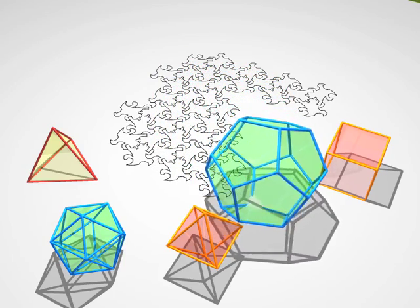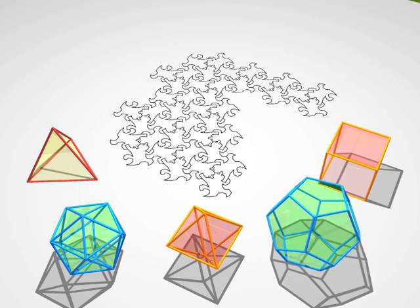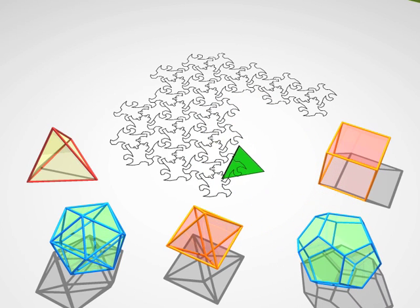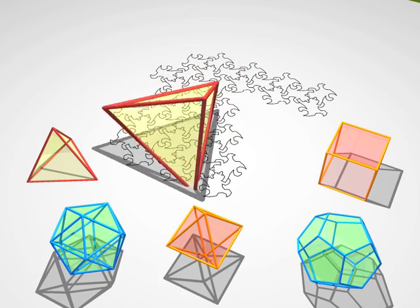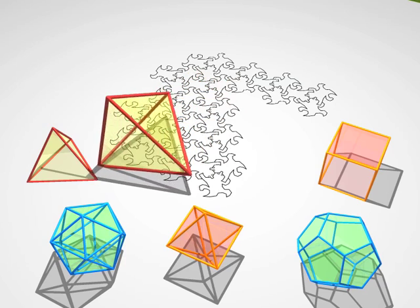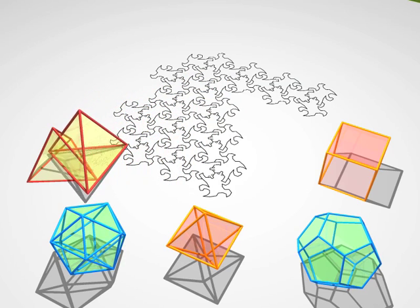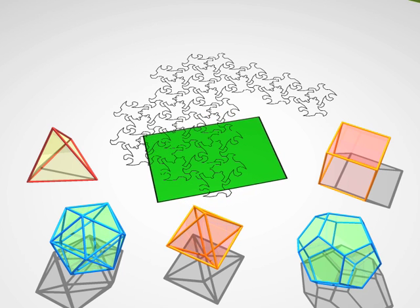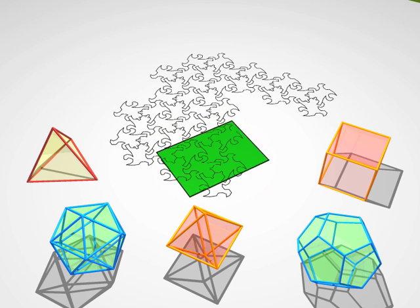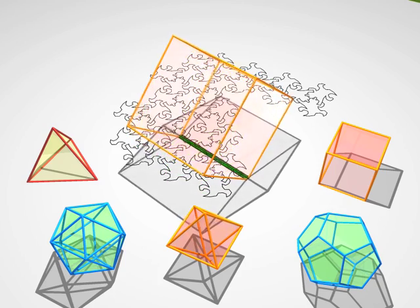Now we're going to show you some cross-sections, and only cross-sections. And you have to guess the polyhedron hiding behind them. That was a tetrahedron. That was a cube.